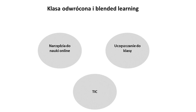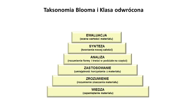Blended Learning, czyli mieszana nauka online twarzą w twarz, może wspierać odwróconą klasę. Blended Learning korzysta z technologii informatycznych w celu osiągnięcia wyższej wydajności w procesie nauczania, łącząc je z uczeniem się w klasie wraz z nauczycielem i rówieśnikami. Ten model uczenia działa również na elementy, które są częścią poznawczego wymiaru taksonomii Blooma.